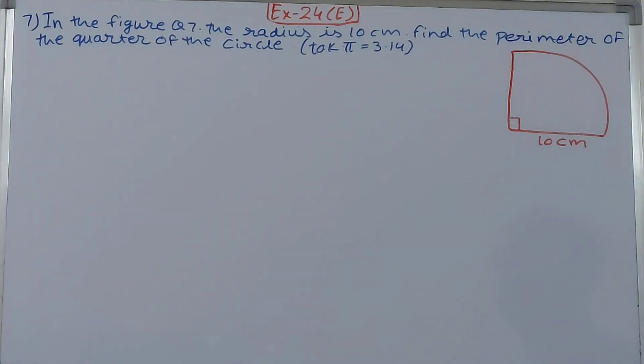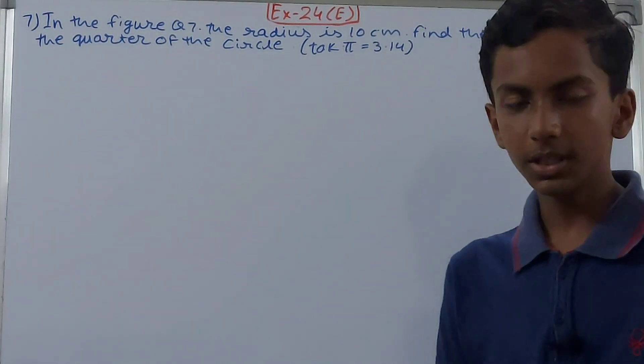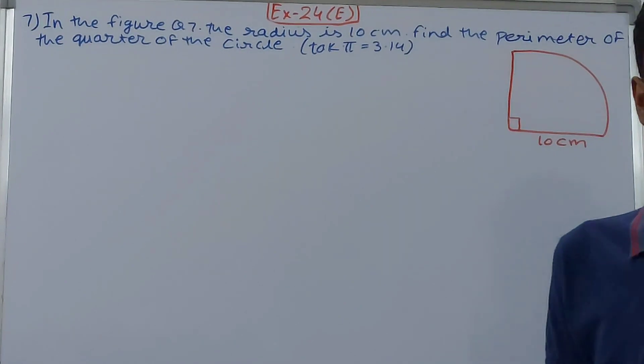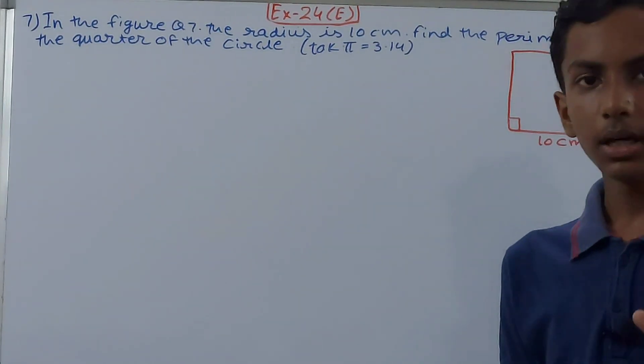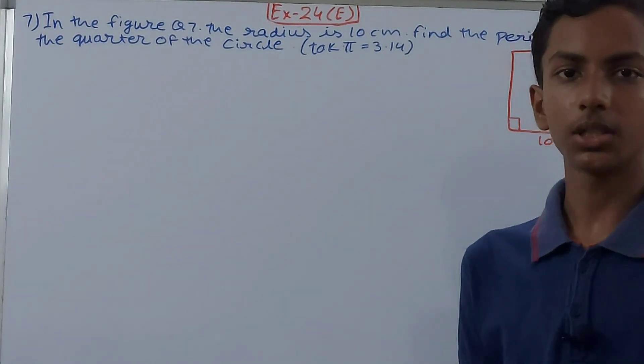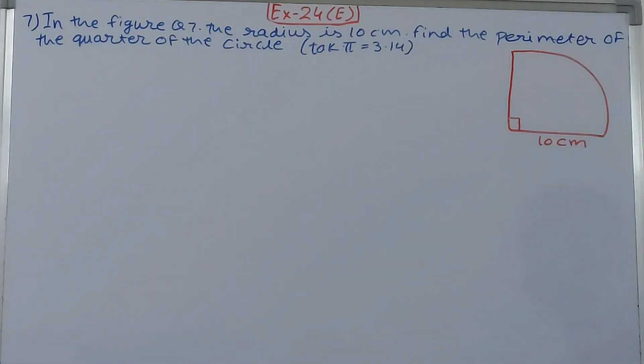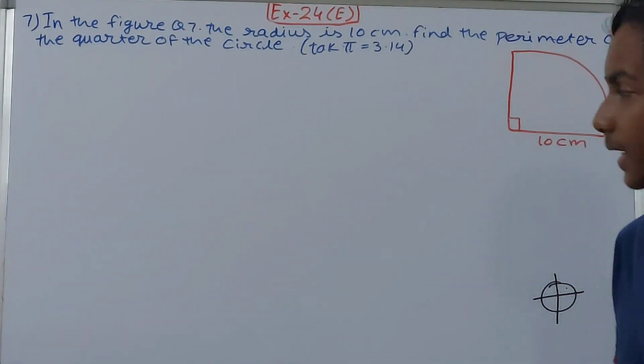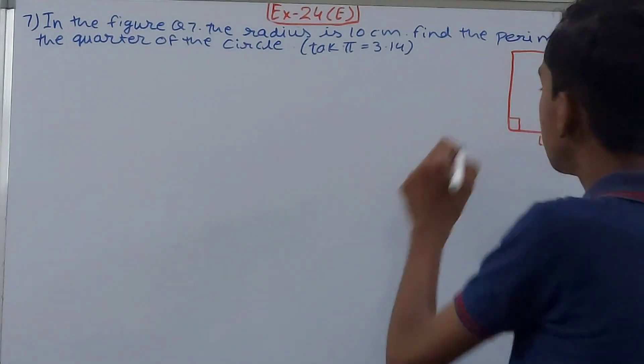In the figure, Question 7, the radius is 10 centimeters. Find the perimeter of the quarter of the circle. This is the figure we have. In this figure, the radius of this quadrant is what - the one-fourth piece of a circle. Like we have a circle, right? We divide it into two and we again divide it into two. So one part out of the four is a quadrant.